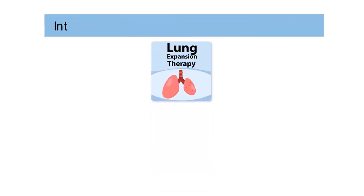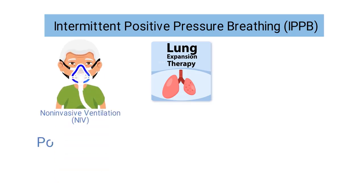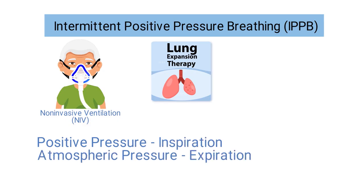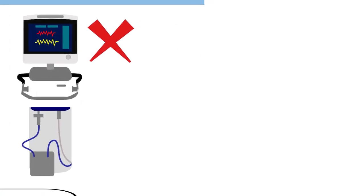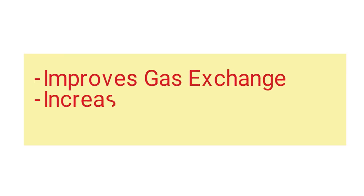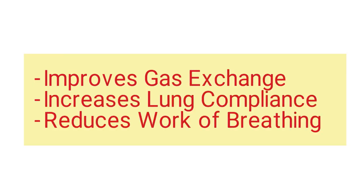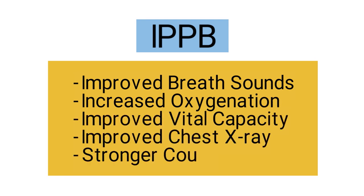Another type of lung expansion therapy is IPPB, or intermittent positive pressure breathing. It's a type of non-invasive ventilation that delivers positive pressure during inspiration and then returns to atmospheric pressure during expiration. The machine is capable of providing full ventilatory support, however that is not its intended use. IPPB was designed to help patients take deeper breaths, stimulate a cough, and prevent or decrease atelectasis. It's effective because it improves gas exchange, increases lung compliance, and reduces the patient's work of breathing. Other potential outcomes include improved breath sounds, increased oxygenation, improved vital capacity, improved chest X-ray, and a stronger cough.